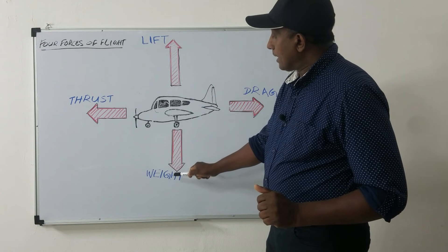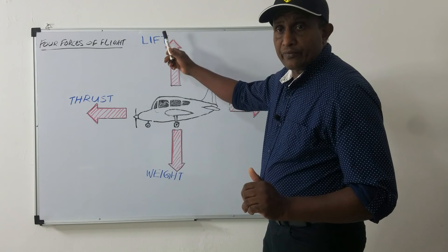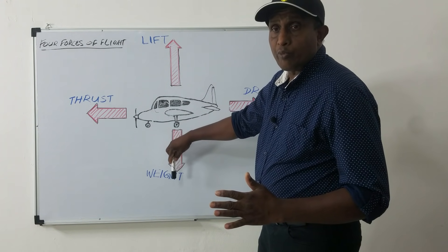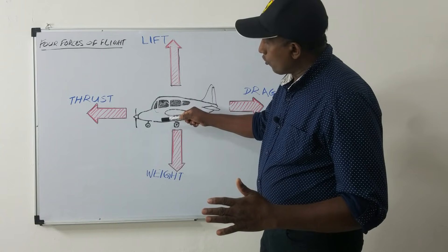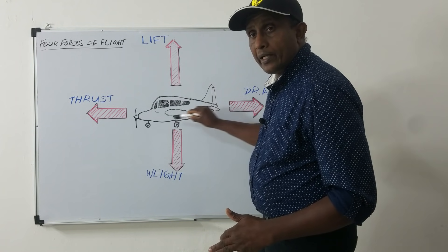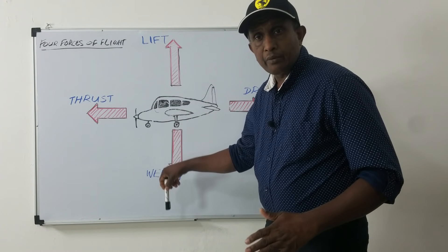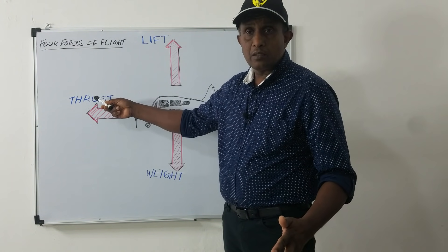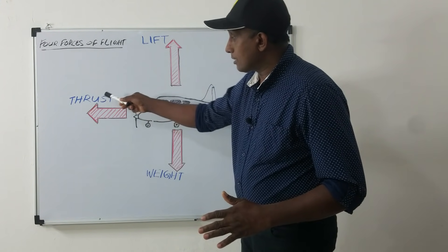Weight opposes lift — it is a downward force caused by the downward pull of gravity. The weight of the airplane is trying to pull it down because of gravity. Thrust is the forward force — it is the power force which propels the airplane through the air.